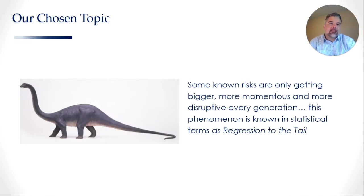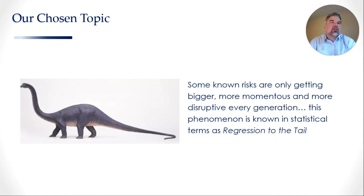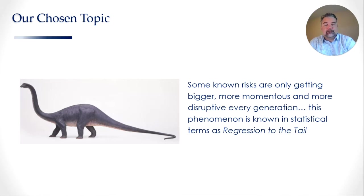This particular episode looks at a very unique statistical concept known as regression to the tail. What it basically states is that some known risks are only getting bigger, more momentous and more disruptive every generation. So if we don't learn to effectively control them now, it's not going to get any easier for us in the future.